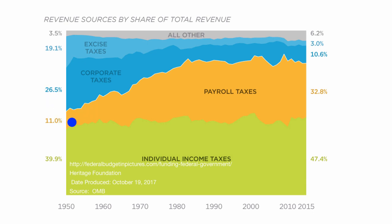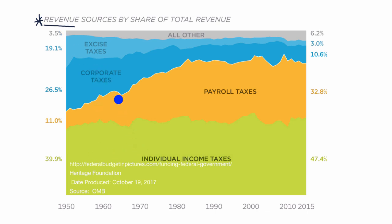In this video we're going to talk about the broad categories of where the federal government gets its revenue and also the broad categories of where it spends that revenue. When we talk about revenue for the federal government, that primarily comes in the form of taxes. This visual shows the four basic types of taxes that the federal government collects.